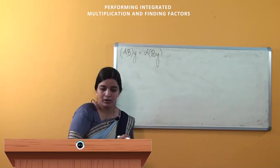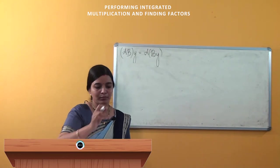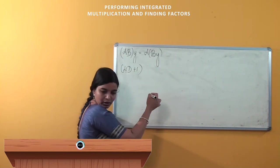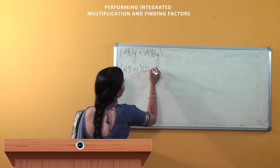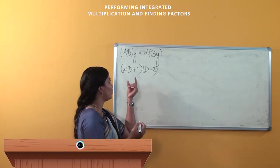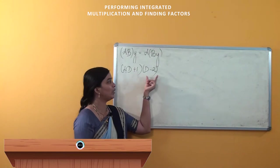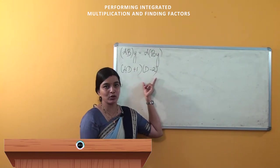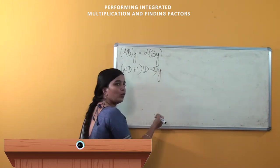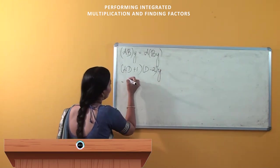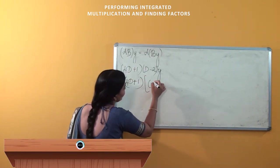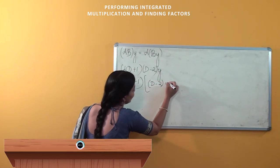We will move further and perform integrated multiplication. The operators given are (4D + 1) into (D − 2), and we have to perform the integrated multiplication. One operator is 4D + 1 and the other operator is D − 2. We will consider y, so this is nothing but (4D + 1) into (D − 2) into y.